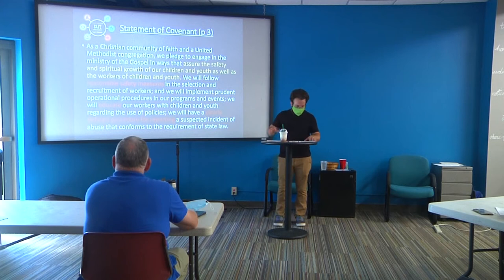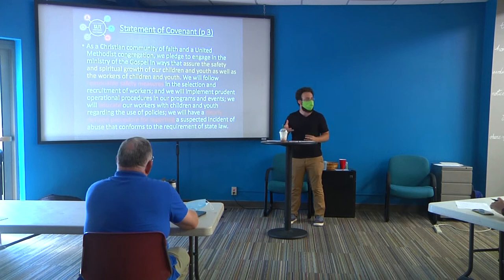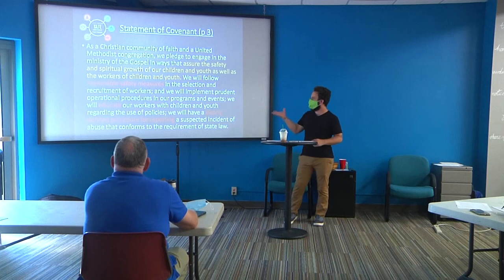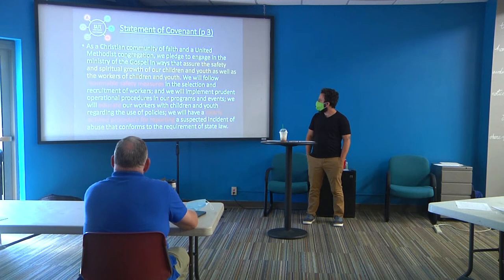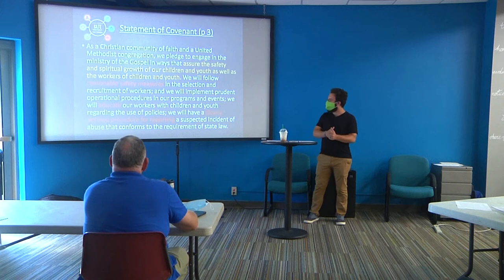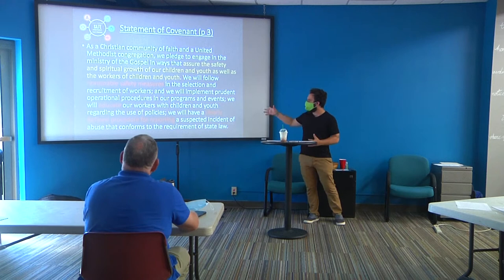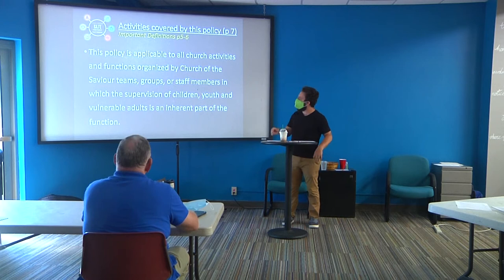We'll begin by looking at our Statement of Covenant on page three of your packets. This is our official covenant statement — what we as staff and volunteers who work with children, youth, and vulnerable adults agree to. Our three main areas are: provide reasonable safety measures, educate people so they are aware of what's going on, and have a clearly defined procedure for responding and reporting in the case of an incident.